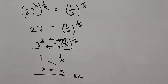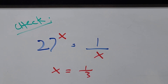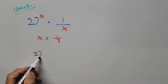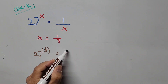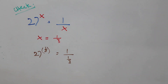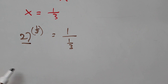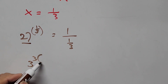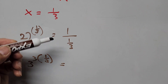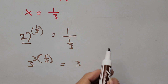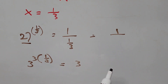If we were to check our answer, we substitute the value of x back into the original equation. Substituting x equals 1 third into 27 to the power of x equals 1 over x, we get: 27 to the power of 1 third equals 1 divided by 1 third. The left-hand side can be written as 3 cubed raised to 1 third, and the right-hand side, 1 over 1 third, equals 3.